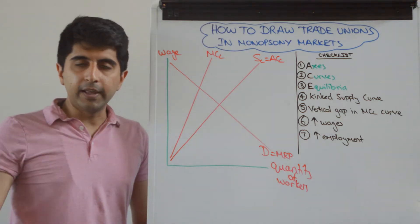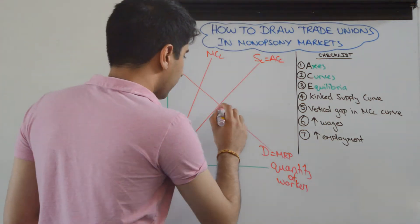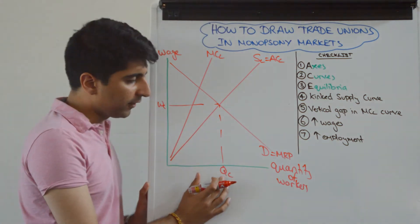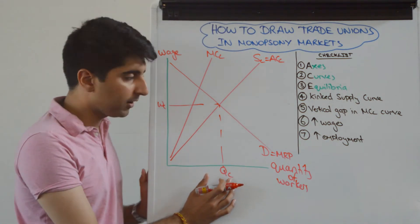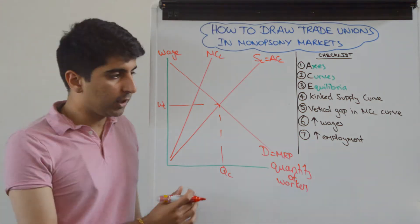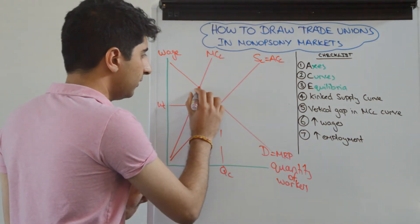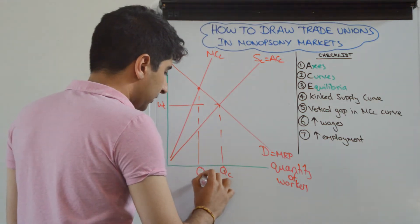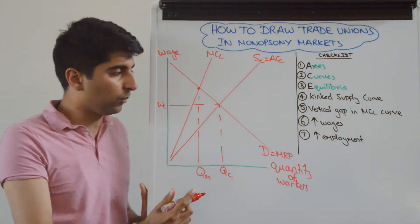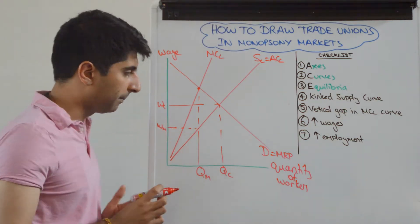We now draw the competitive outcomes on this diagram. The competitive outcomes are found where supply meets demand — that gives us QC and WC: QC is the competitive quantity of workers, WC is the competitive wage. We then work out the monopsony quantity and wage where MRP equals the marginal cost of labour. Go to that point and label it QM. Remember, the wage rate is read off the supply curve — that gives us WM.